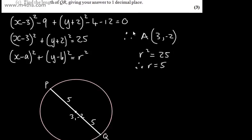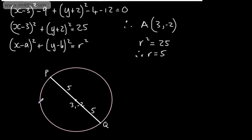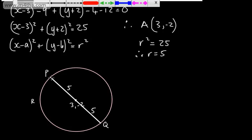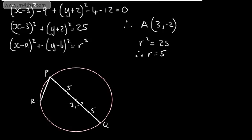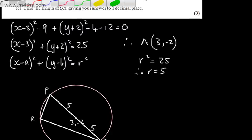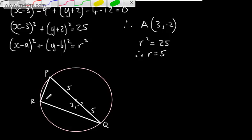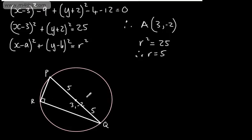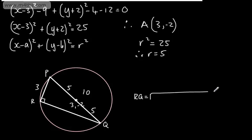P to R is equal to 3, so we put R just here, and we want to find the length of RQ. Using circle theorem, we can say that angle PRQ is going to be a 90 degree right angle — angles in a semicircle give a 90 degree right angle. PR is 3 and PQ is 10, so using Pythagoras, RQ is going to be the square root of 10 squared minus 3 squared.